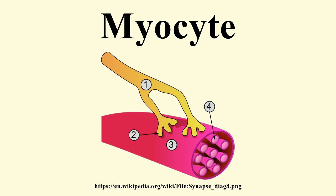A myocyte is the type of cell found in muscle tissue. Myocytes are long, tubular cells that develop from myoblasts to form muscles in a process known as myogenesis. There are various specialized forms of myocytes: cardiac, skeletal, and smooth muscle cells, with various properties.